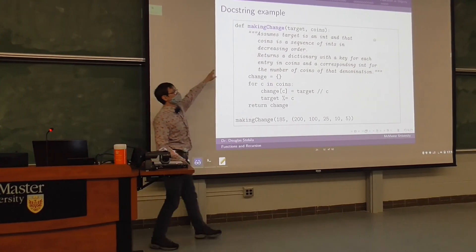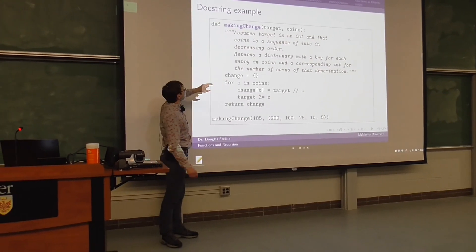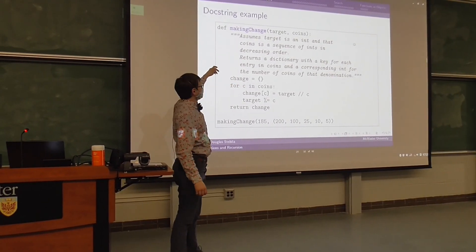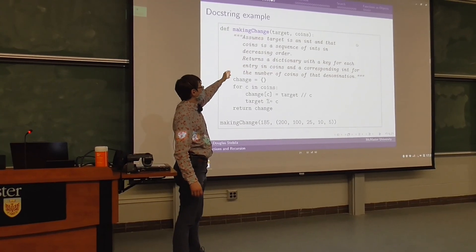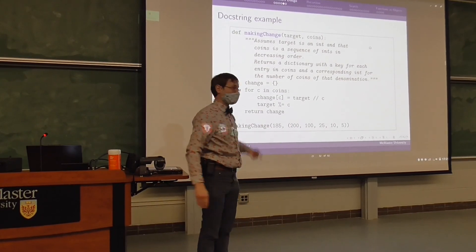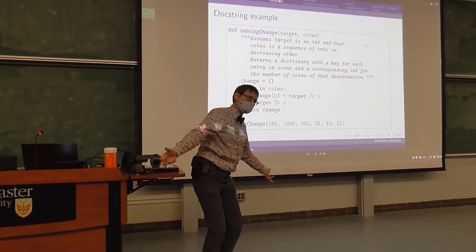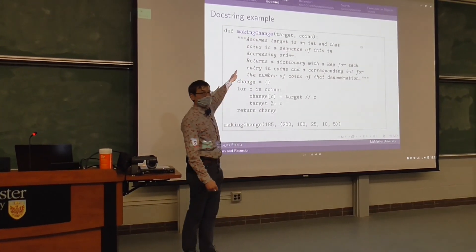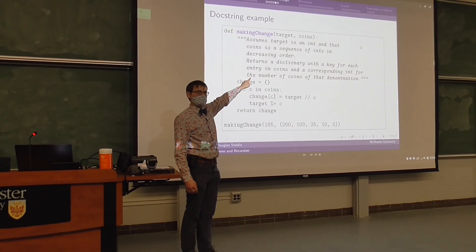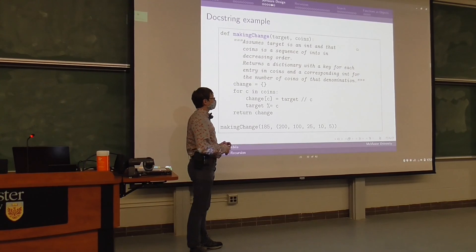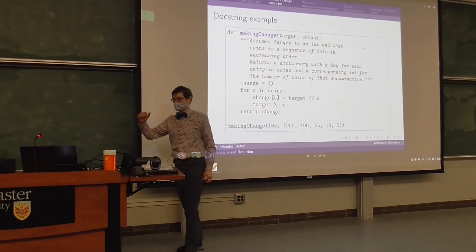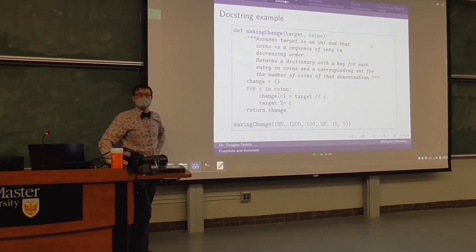So for example, the make change problem from the last class, this is the documentation, this is good documentation for that function. Assumes target is an integer and that coins is a sequence of integers in decreasing order. In decreasing order, very very important. If that's not true that algorithm doesn't work. If that's not said in the documentation, how are you supposed to know that's supposed to be the case? Because there's nothing about the name coins which implies that it should be in descending order. Returns a dictionary with a key for each entry of coins and a corresponding integer for the number of coins of that denomination. That describes what the output is in terms of the inputs. Any questions? All right, have a good weekend.